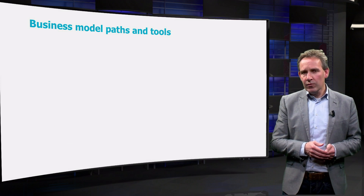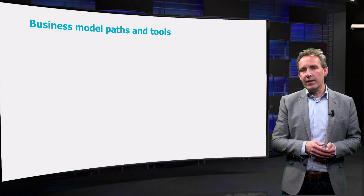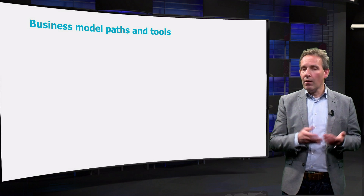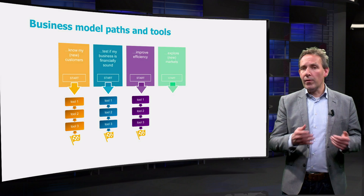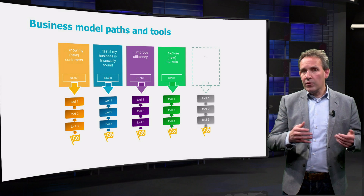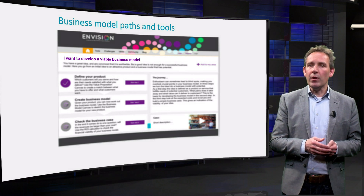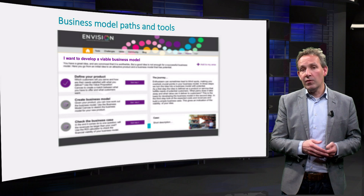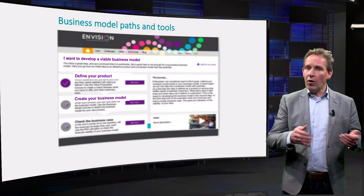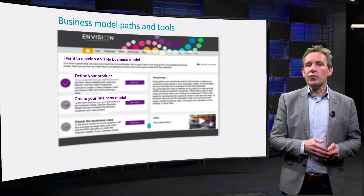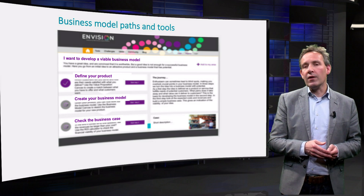Until now we discussed 'I want to's and business model paths to achieve your business model innovation objectives. So how can tooling help you with this, and which tools should you use? For each 'I want to', we guide you to the right combination of tools that will help you to achieve your objective. We will come back to tools in the assignment. For example, if you want to develop a viable business model, you could start with a tool to define your value proposition, to map your customer needs and to define your product. Next, you could use a tool to define your whole business model. And finally, you could use a tool to calculate whether you are making a profit in the end. Together, these three steps form a path like shown in the picture.